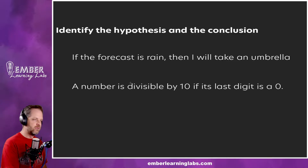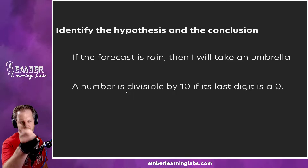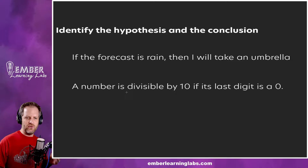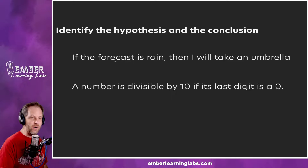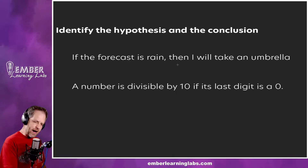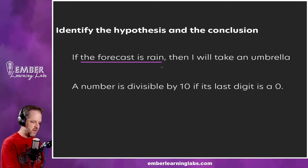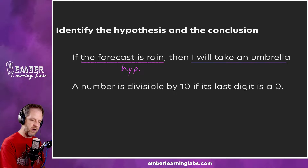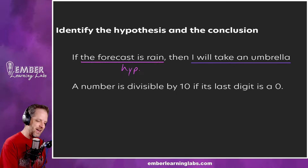I initially misread 'forecast' as 'forest' — I can read, I promise! Run, Forrest, run. So: if the forecast is rain, the hypothesis is 'the forecast is rain.' We'll use two different colors to distinguish hypothesis and conclusion — no promises on full consistency, all bets may be off.